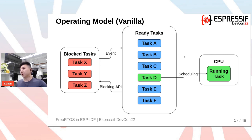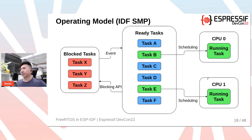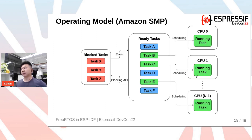In terms of operating model: Vanilla FreeRTOS is single-core — the user creates tasks, some are blocked on events and some are ready, and the single CPU picks one ready task to execute at any time. In IDF-SMP, it's a dual-core scheduler — same concept with blocked and ready tasks, but now two CPUs each pick their own task to run, and a task cannot be run by two CPUs simultaneously. With Amazon SMP FreeRTOS, this extends to n cores, from CPU zero up to CPU n-minus-one.